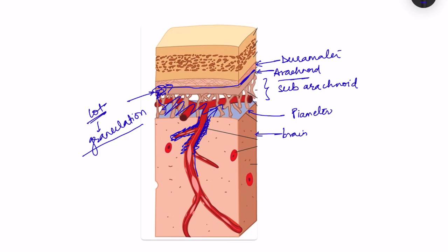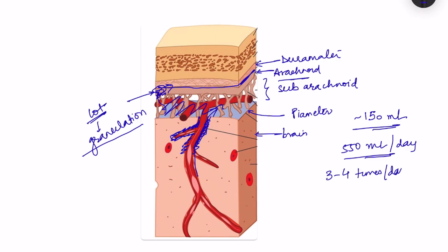Approximately 150 ml of CSF is present in total throughout the ventricles, the central canal of the spinal cord, and the subarachnoid space. However, the rate of formation is quite high — approximately 550 ml per day — so the cycle of formation and reabsorption continues throughout the day, recycling approximately three to four times per day.